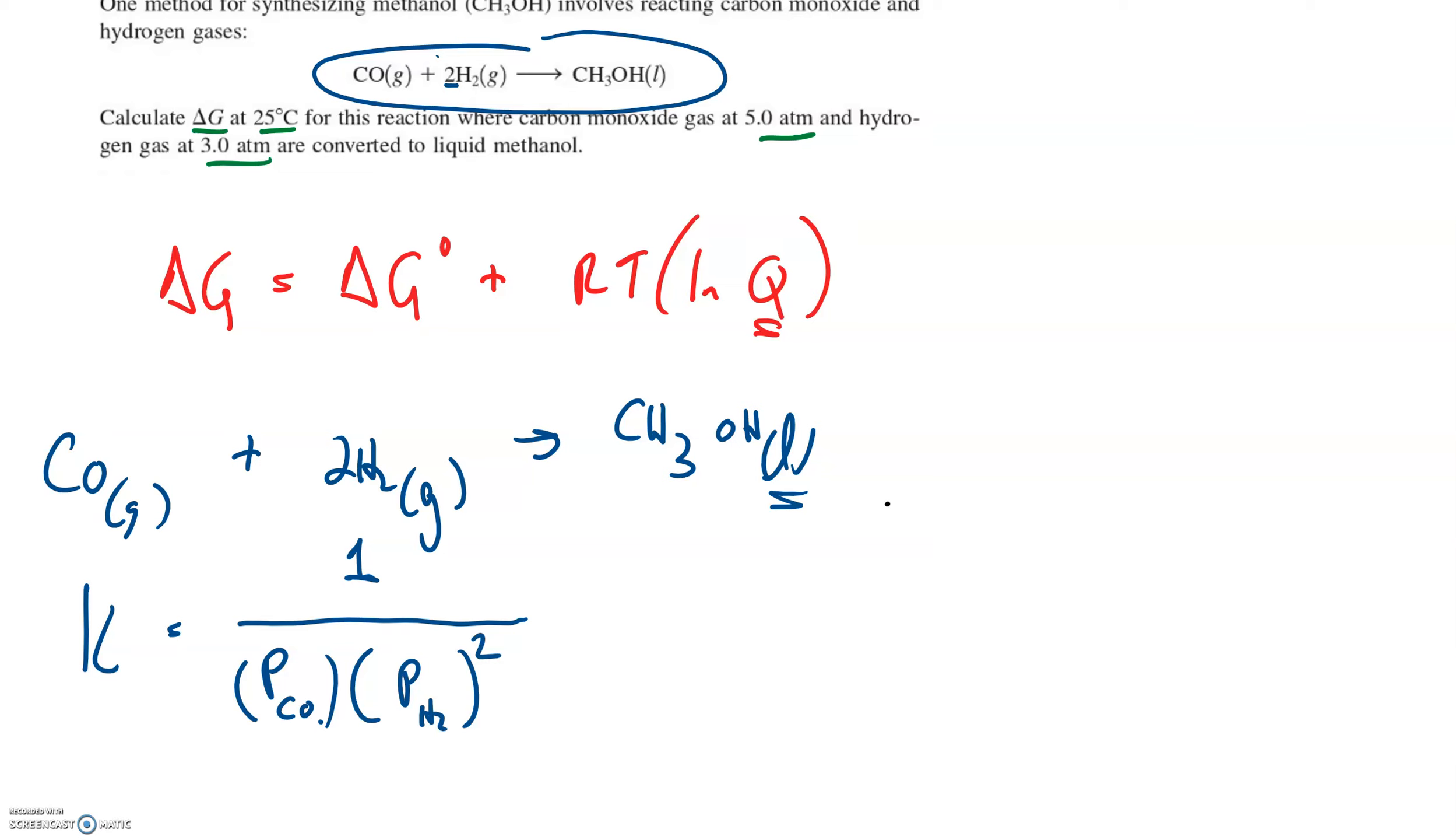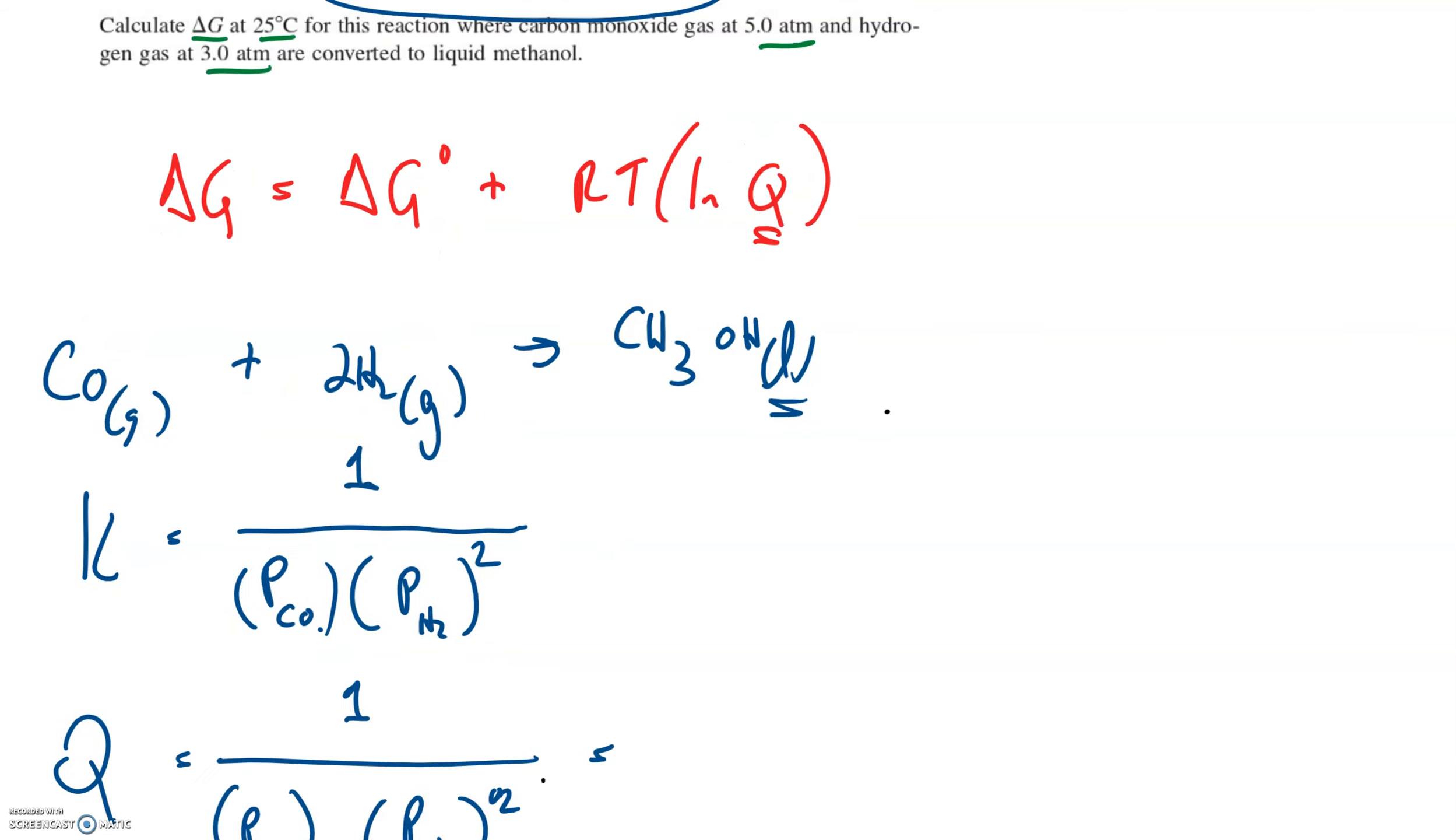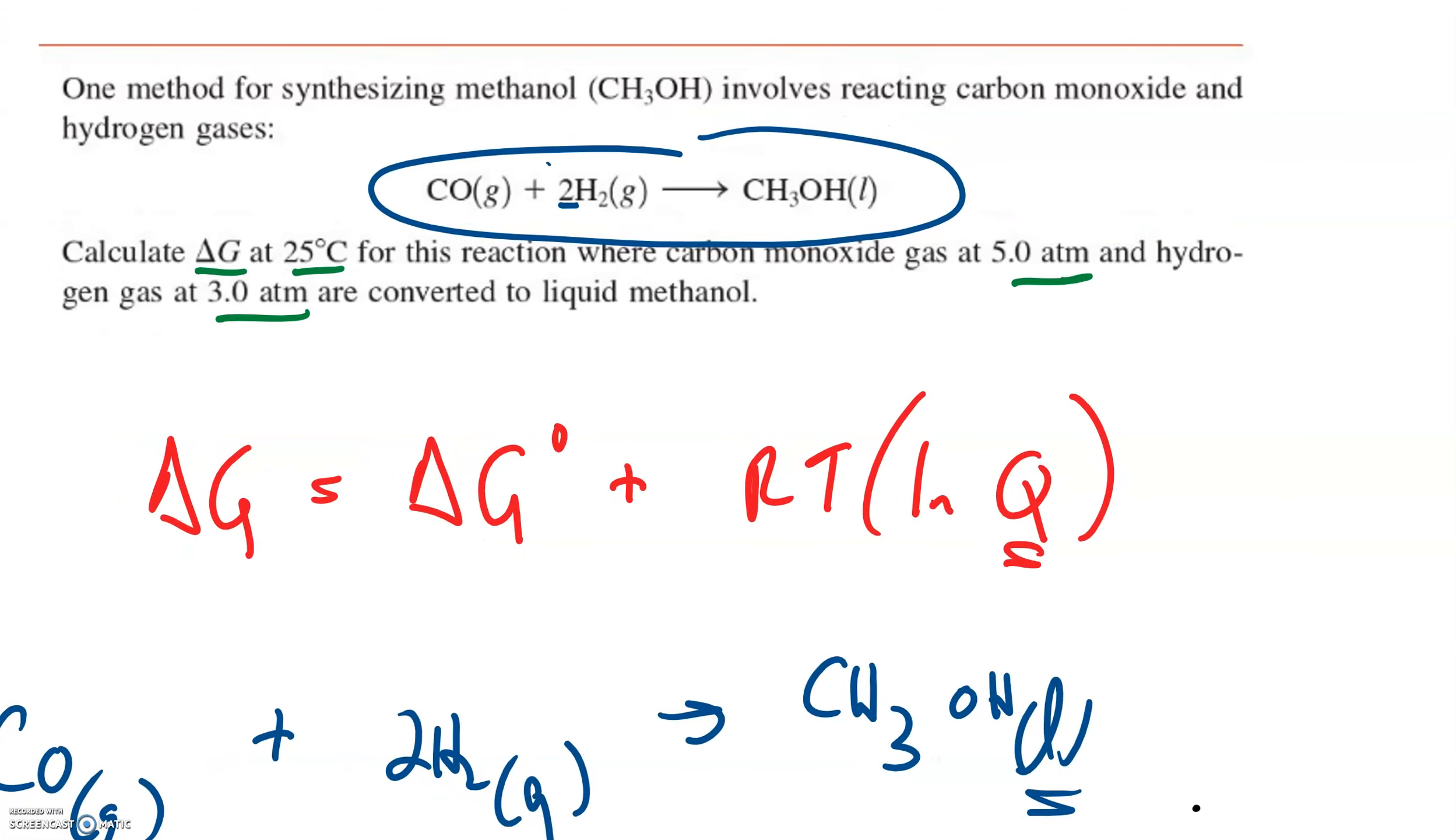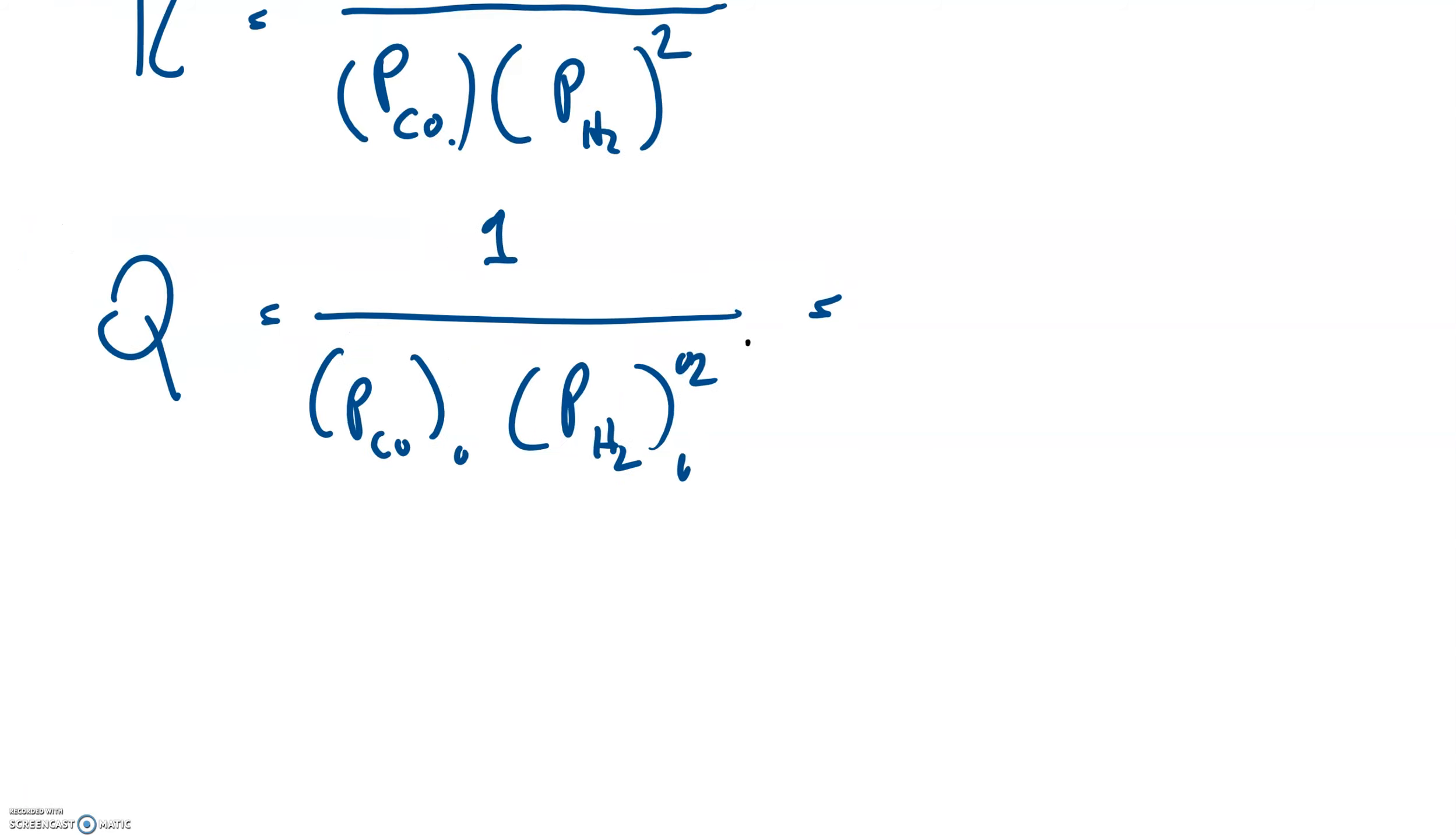We could find the Q by using the same equilibrium expression and just using their initial partial pressures. So the partial pressure of carbon dioxide times the partial pressure of hydrogen gas, that's a little 2 after it. Let's plug those in. The partial pressure of carbon dioxide gas is 5 and hydrogen gas is 3. Let's throw those into this part right here and see what we get.